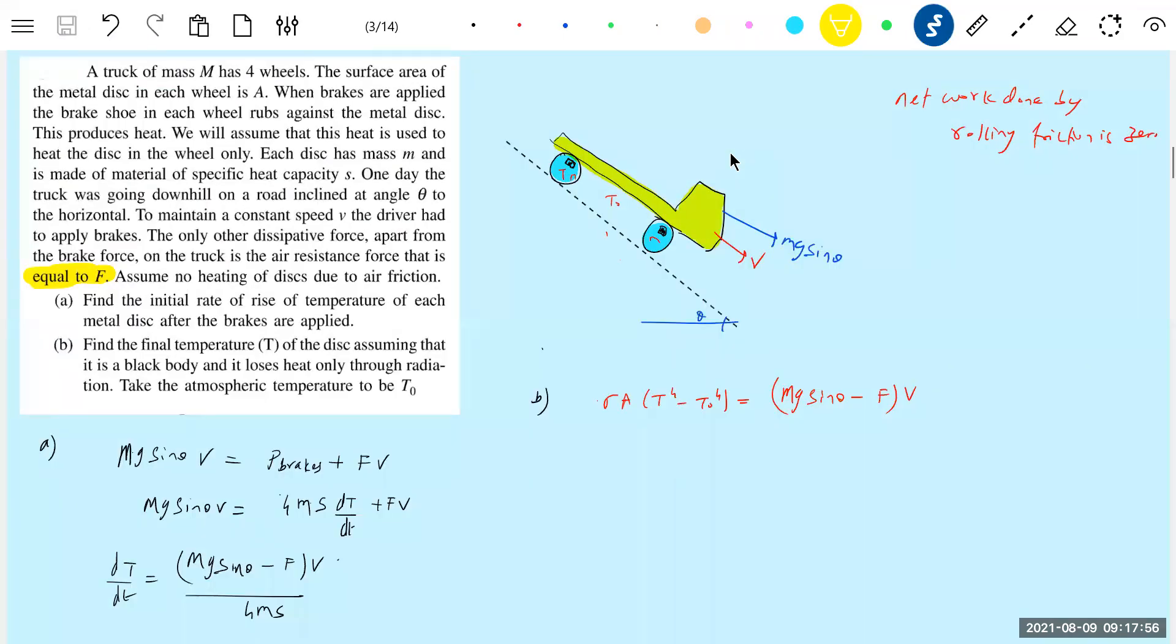Okay, simple, this one. So usually the mistakes what we do here only: capital M plus 4m. This was the one primary mistake what we do.